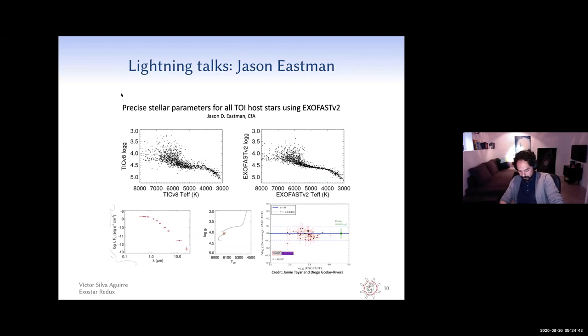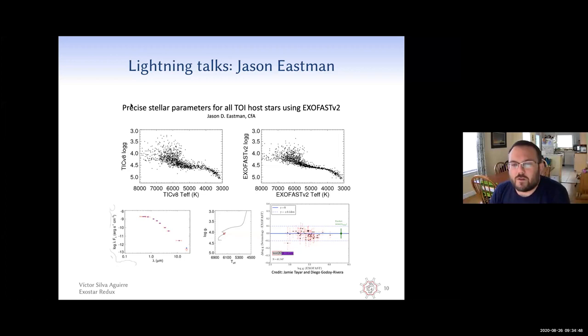Hi, thanks for having me here. So today I want to talk to you about the work that I've done characterizing the TOI host stars using ExoFast. ExoFast is a code that can fit for planets and stars and radial velocity and all sorts of things that you might have. But it can also just do the star alone. I want to show you the results that I've done on just the sample of 2,000 host stars from all the TESS objects of interest.